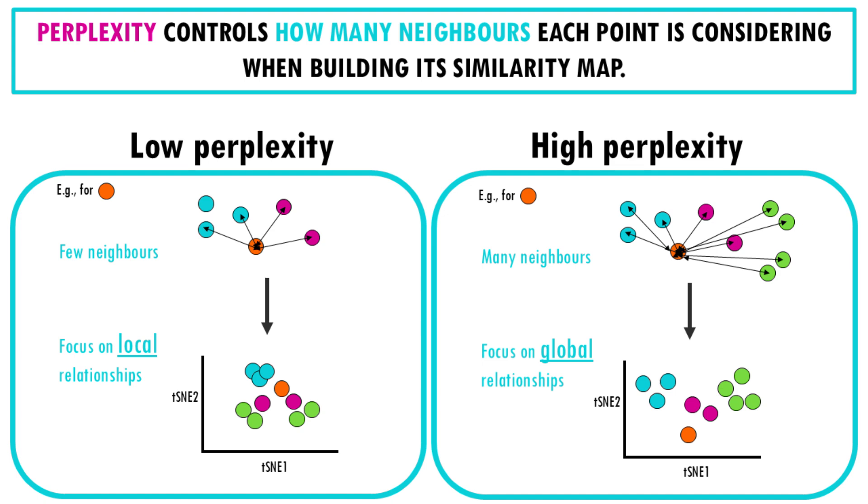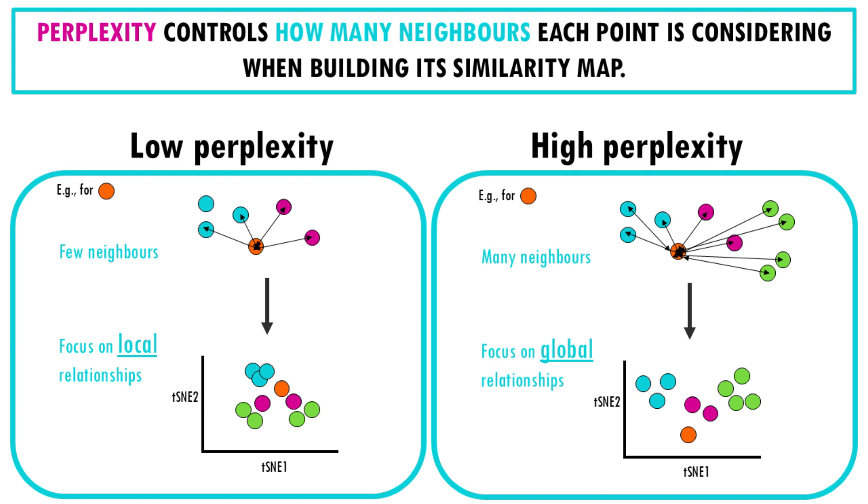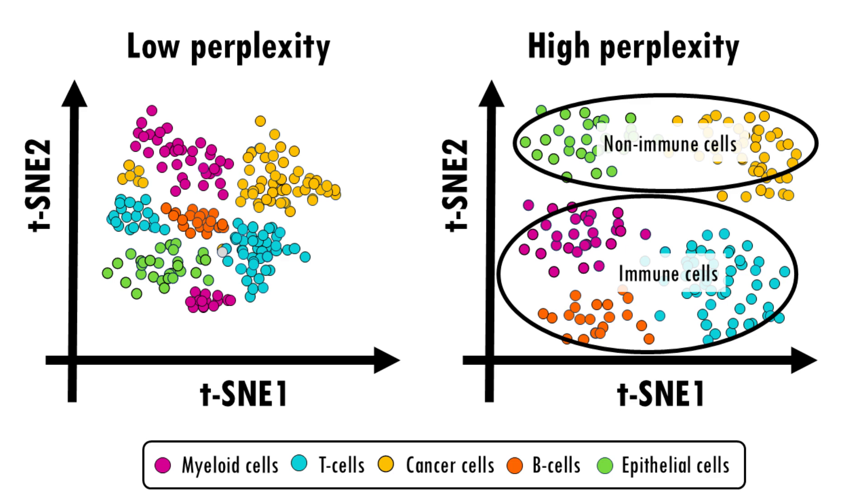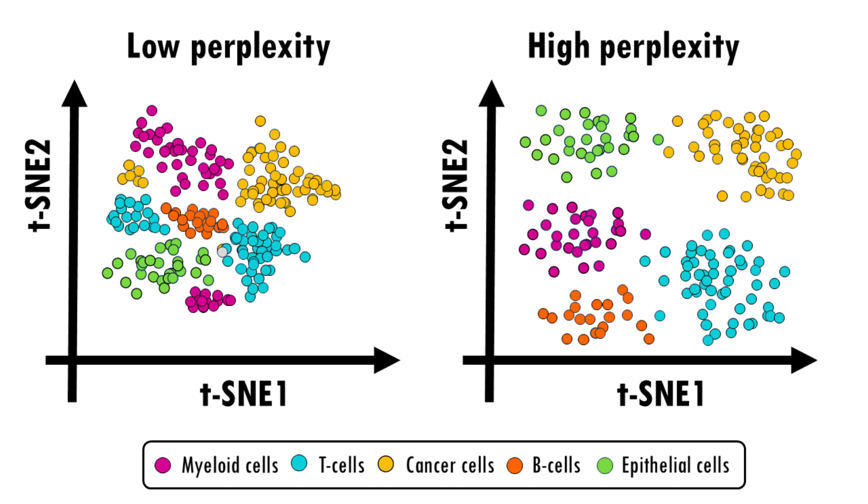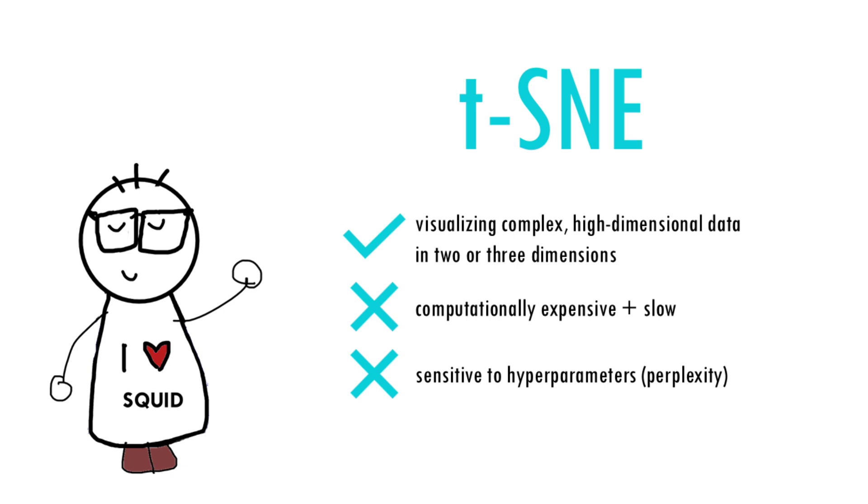The immune cells might form a cluster and the epithelial cells might form another, even if there's some variability in gene expression within each group. In our single cell RNAseq data, setting a low perplexity would help us visualize small differences between immune cell types, for example TCD4 positive cells and TCD8 positive cells, but it might not preserve the large-scale organization between cell types like immune cells versus non-immune cells, and these might appear more mixed. So t-SNE does require a bit of optimization to find the right perplexity to visualize your dataset.